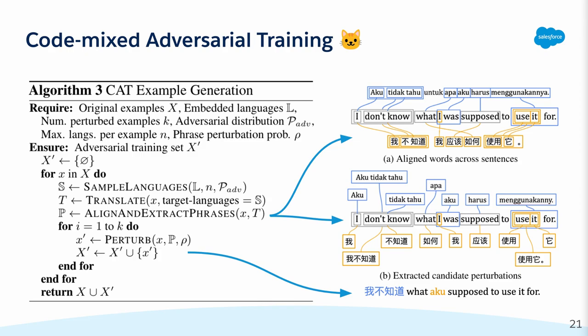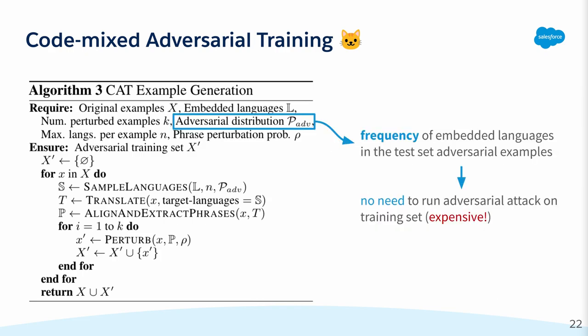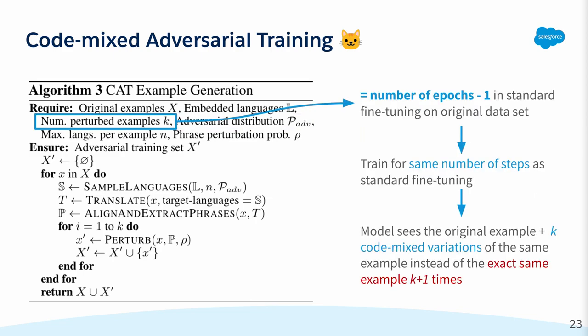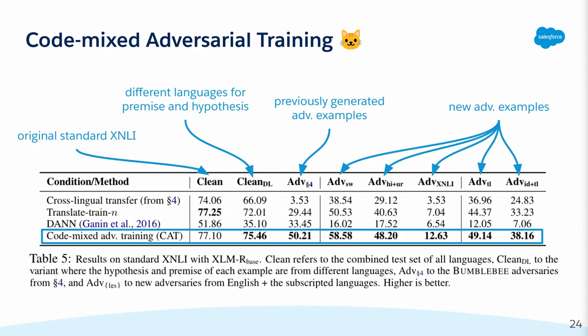Next, we propose code-mix adversarial training to improve the model's robustness to code-mixed adversaries. The adversarial training example generation process is largely similar to how Bumblebee generates its candidates, but we use the adversarial distribution to randomly sample perturbations instead of running the attack directly on the training set, which would be much more expensive. Additionally, we propose to train the model in a manner where it sees a slightly different variation of the example each time, rather than the same example repeatedly as in standard fine-tuning. This allows us to improve the model's robustness in the same number of steps while barely sacrificing clean accuracy, as we can see from the table here.